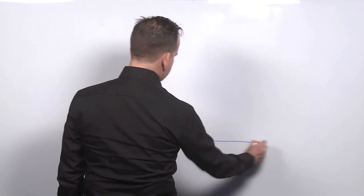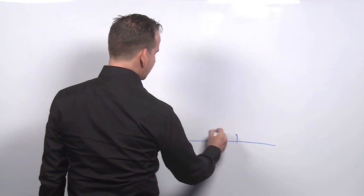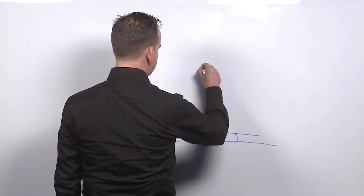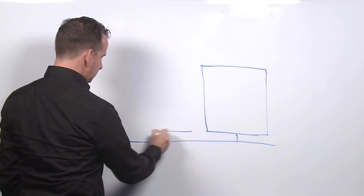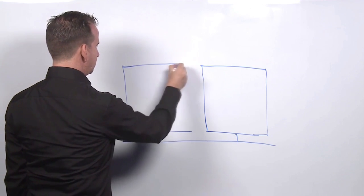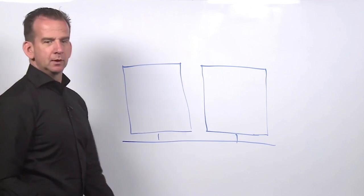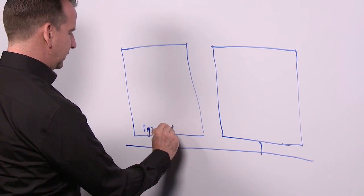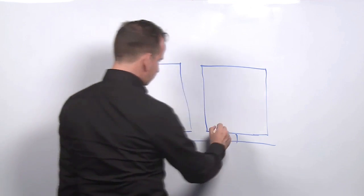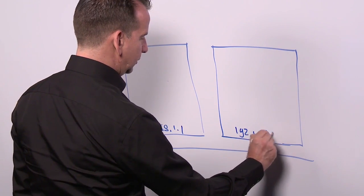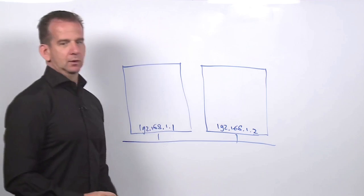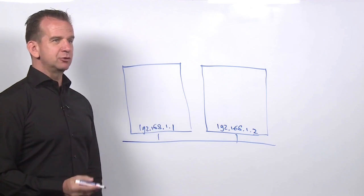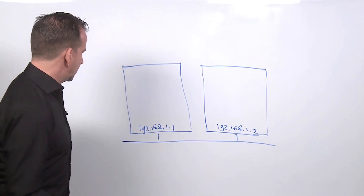Let me draw a quick overview picture of Kubernetes networking. Let's say we have a public network, and on the public network we have two worker nodes. The worker nodes have their own network addresses — let's say 192.168.1.1 and 192.168.1.2. These IP addresses make it possible for the nodes to communicate to one another.